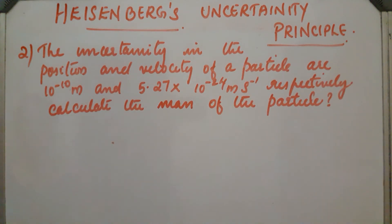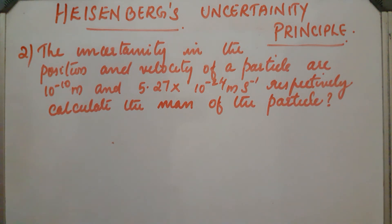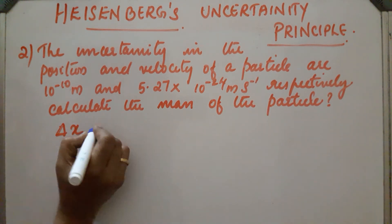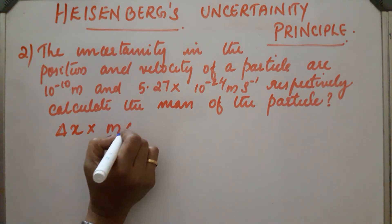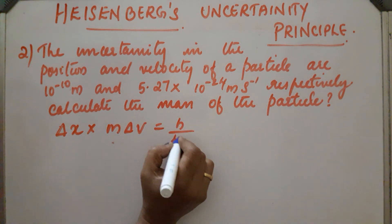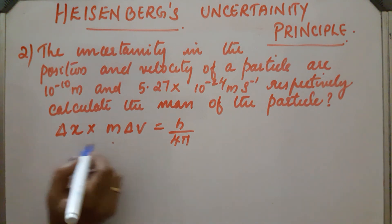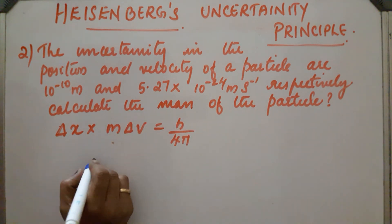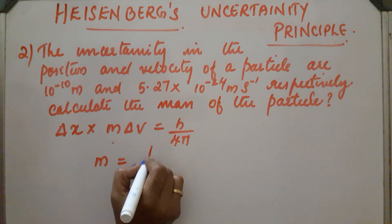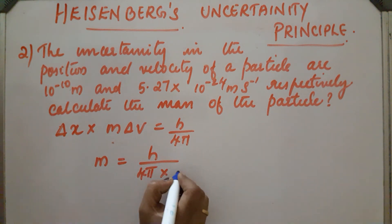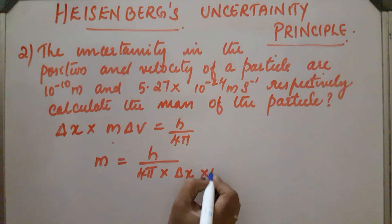Second problem: The uncertainty in the position and velocity of a particle are 10⁻¹⁰ meter and 5.27 × 10⁻²⁴ meter per second respectively. Calculate the mass of the particle. The equation is Delta X into M Delta V equals h by 4 pi. Since Delta X and Delta V are given, we need to find mass: M equals h divided by 4 pi into Delta X into Delta V.